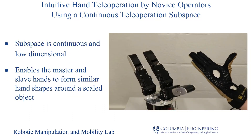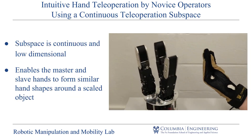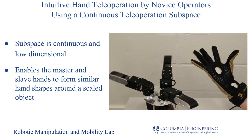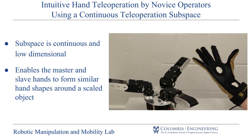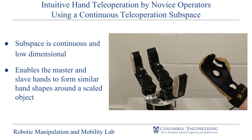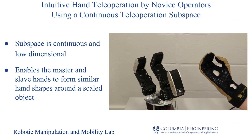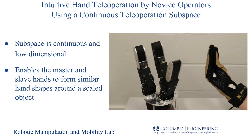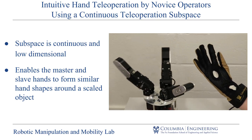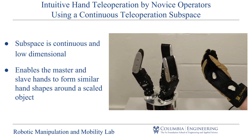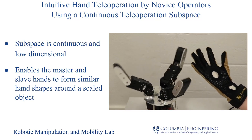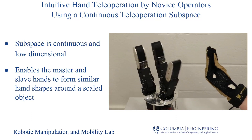Our subspace is continuous and low-dimensional. Each basis vector of the subspace corresponds to a different hand motion: size of the object a hand can hold, spread of the fingers, and curl of the fingers. Teleoperation mapping enables the master and the slave robotic hand to form similar hand shapes around a scaled object.